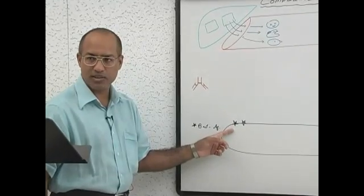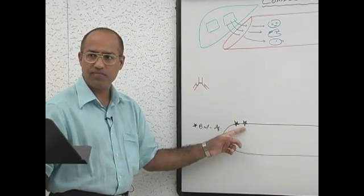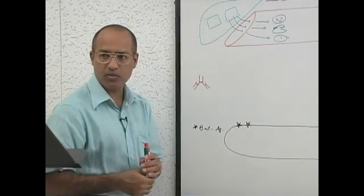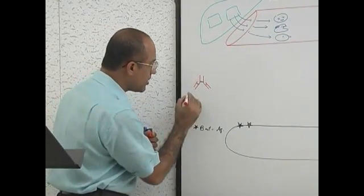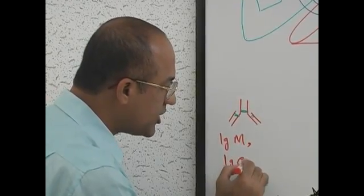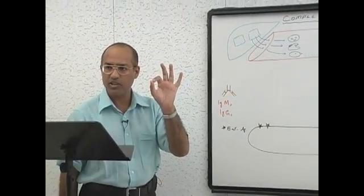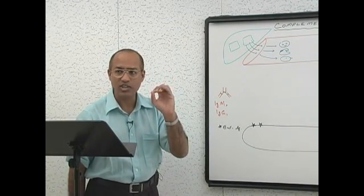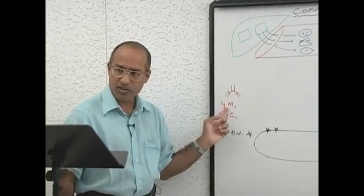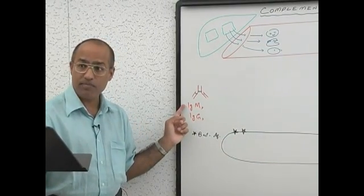When this bacterium entered your body, it activated the humoral immune response and antibodies were produced against these antigens. There are many types of antibodies, but antibodies which can specifically activate the complement system belong to the IgM class or IgG class. There are five main classes of antibodies — IgM, IgG, IgA, IgE, and IgD — but the complement-activating antibody classes are only IgG and IgM.